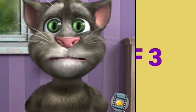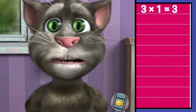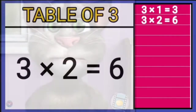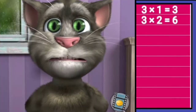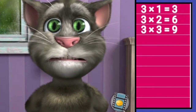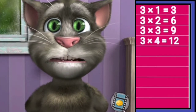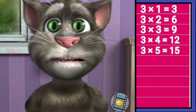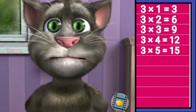Table of three. Three ones are three, three twos are six, three threes are nine, three fours are twelve, three fives are fifteen.